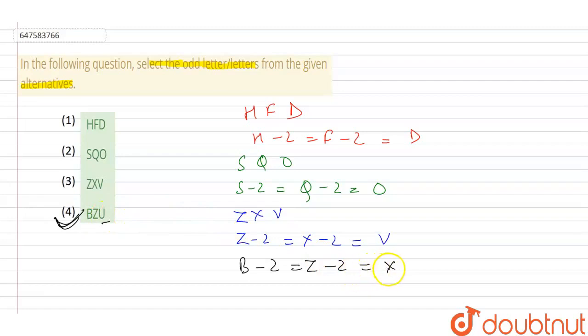Here guys, this is X. Here is U. So this is the fourth option. This is odd. The rest are all similar. So I hope you understood the explanation guys. Thank you.